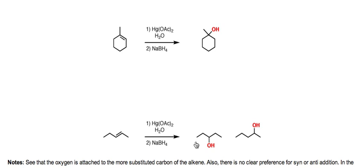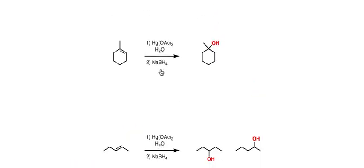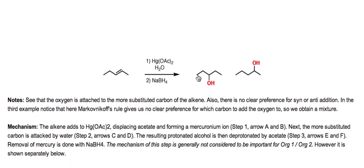One thing I haven't mentioned is that the NaBH4 at the end is for removing the mercury. We'll talk about that in more detail when we discuss the mechanism.